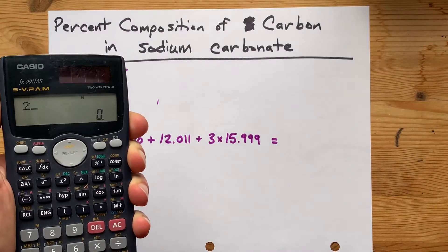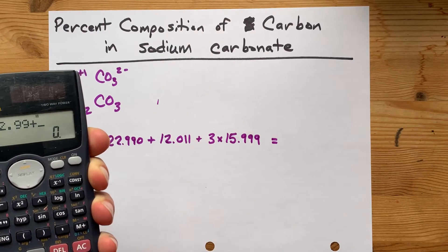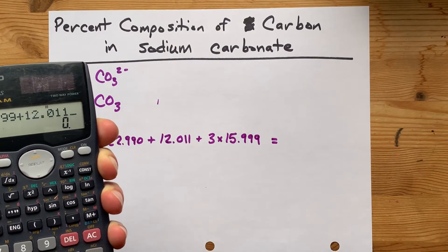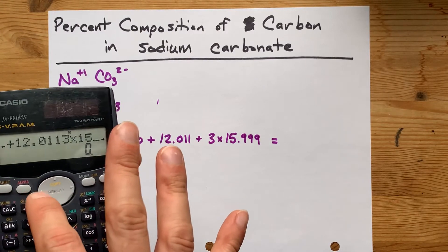Two times 22.99. Two times 22.99 plus 12.011 plus three 15.999s. Oh, I forgot a plus. That would have been catastrophic.